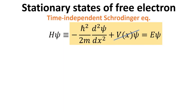First, we recall the time-independent Schrödinger equation. The Hamiltonian H has two terms, namely the kinetic and potential energy. Written down in the position representation, we have the familiar time-independent Schrödinger equation highlighted in yellow.